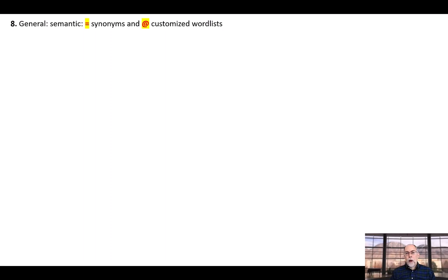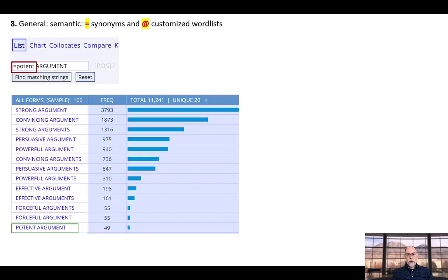The corpora also allow you to search by synonym, which is something that is not possible with any other corpus site. For example, suppose you're a learner of English and you want to know which synonyms of potent or powerful are the most common with the word argument. With one simple search, you can see that although potent argument does exist, synonyms like strong, convincing, or persuasive are much more common.